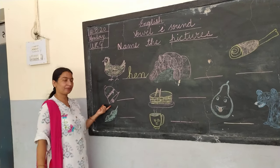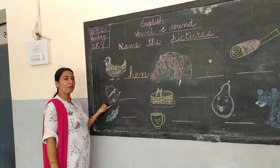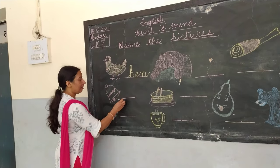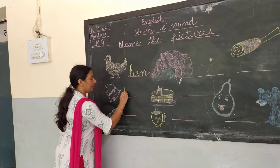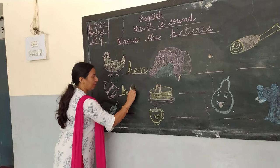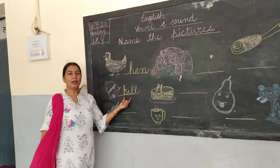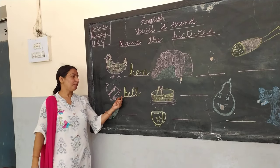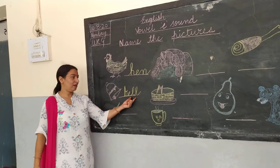The second picture is of a bell. So how do you write bell? B-E-double-L, bell. B-E-double-L, bell.